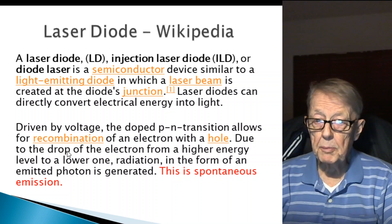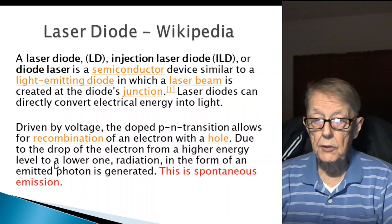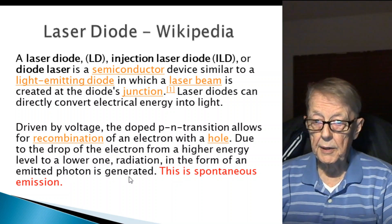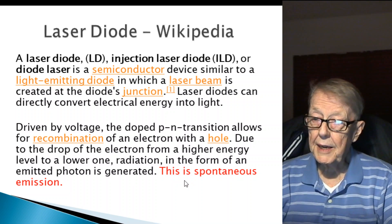Due to the drop of the electron from higher energy to a lower one, radiation in the form of an emitted photon is generated. This is spontaneous emission.